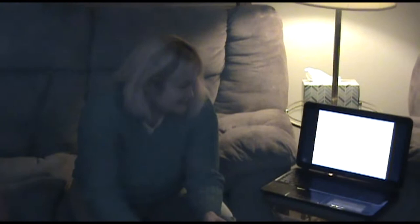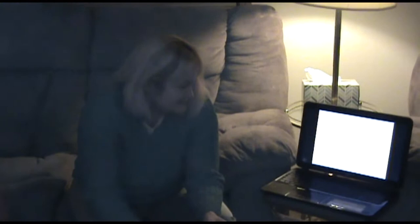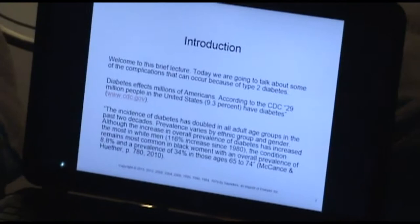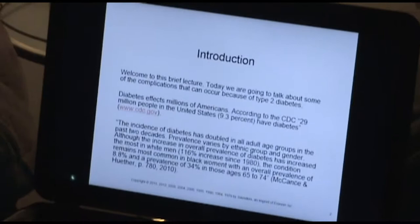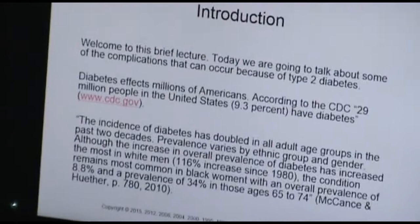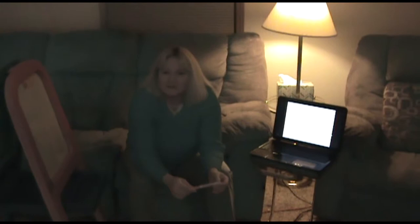Today we're going to talk about some of the complications that can occur because of type 2 diabetes. Diabetes affects millions of Americans. According to the CDC, there are 29 million people in the United States that have diabetes — type 2 diabetics — which is 9.3% of the population. We see this a lot in hospitals, which is why it's important for nursing students to understand how diabetes can affect patients, because a majority of your patients will have diabetes.